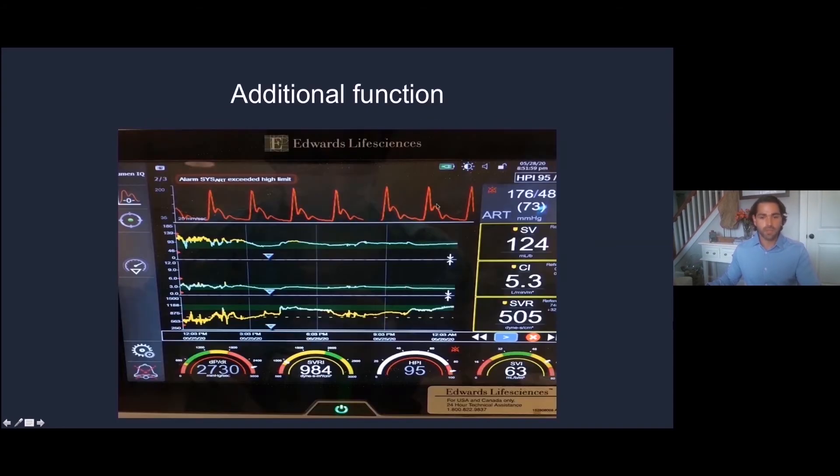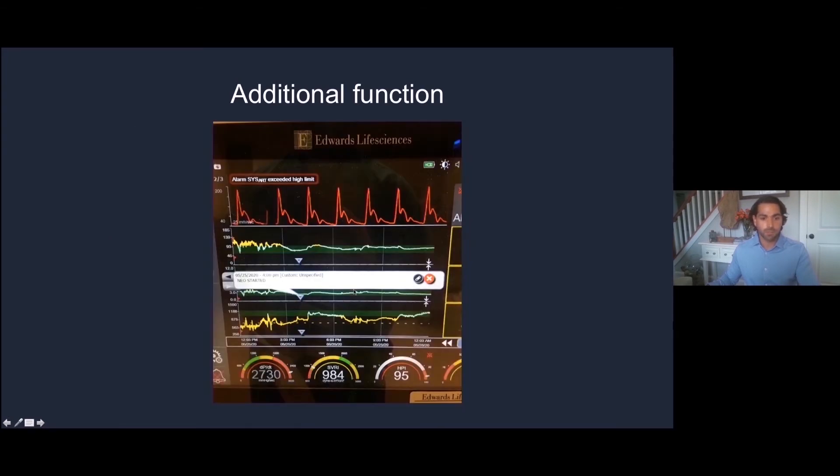We're able to implement interventions. When we start a pressor or give a fluid bolus or give blood or a vasodilator, we can click this button, implement one of these, and see the trend lines after we did that. This patient was started on neosynephrine. We got the appropriate response in SVR, which we saw was 500 on the last page.